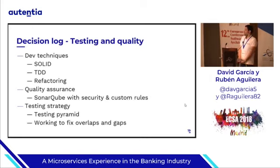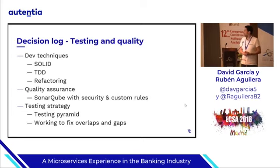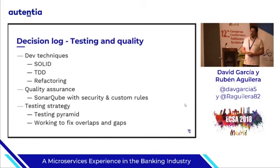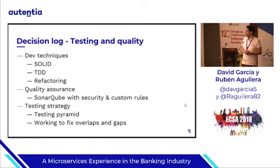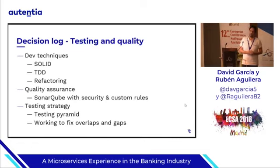Regarding our testing strategy, we were following the classic testing pyramid, but we saw some overlaps and gaps, and we are trying to fix them by implementing ATDD with Cucumber.